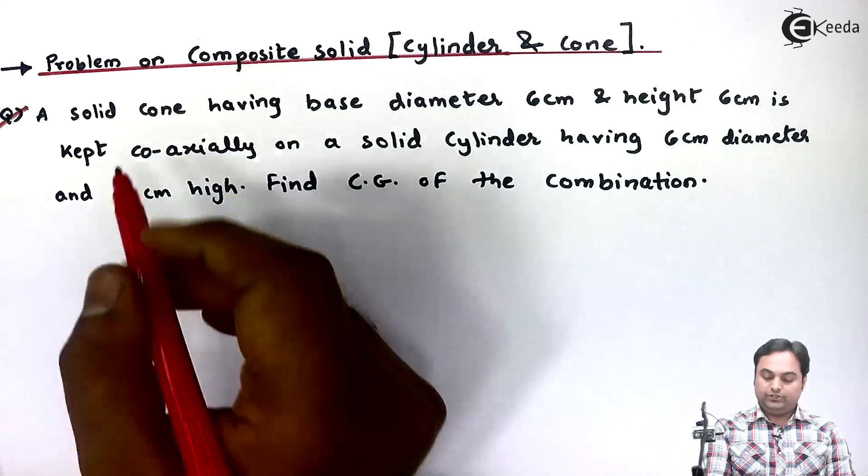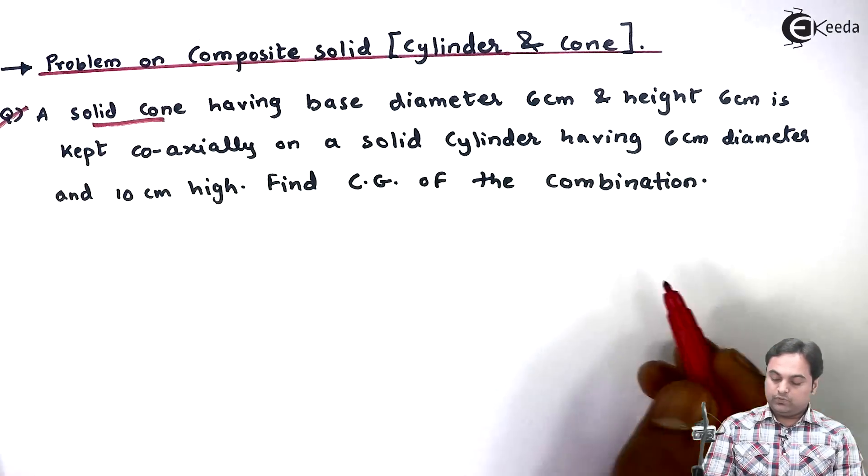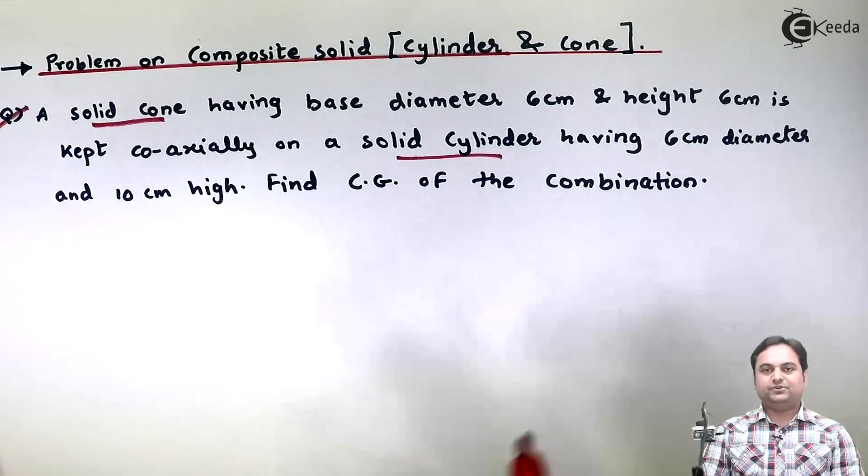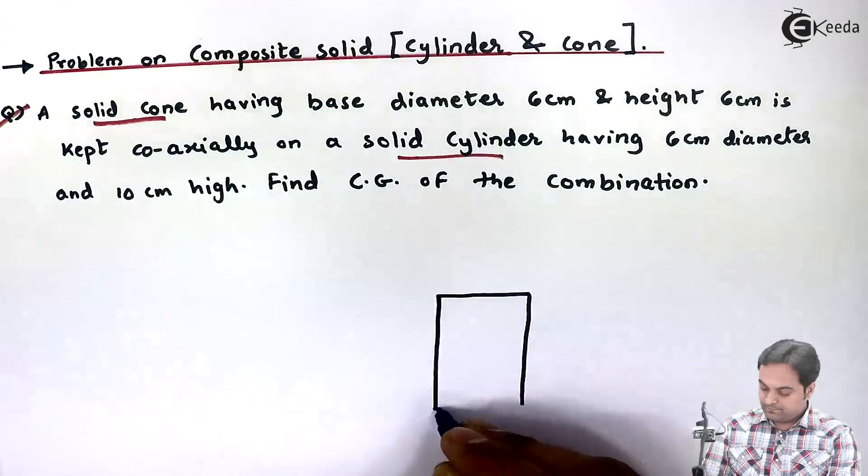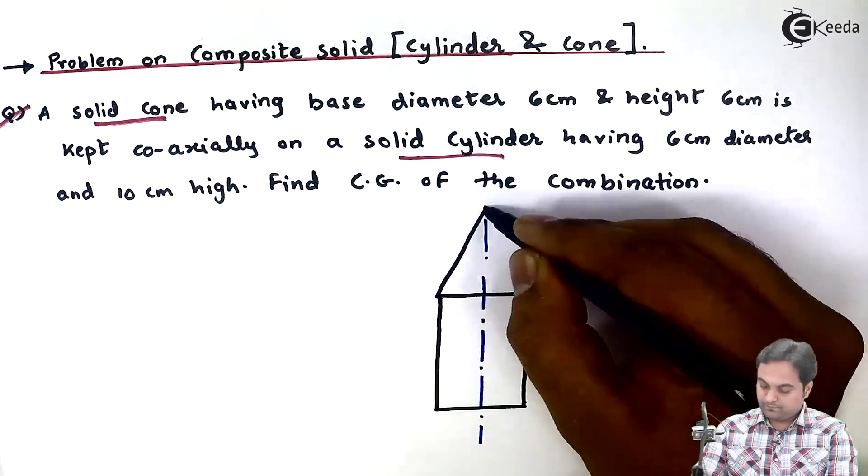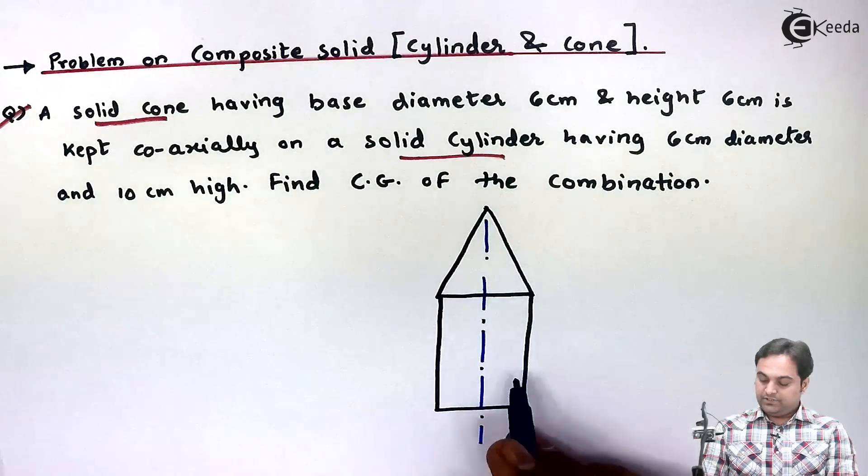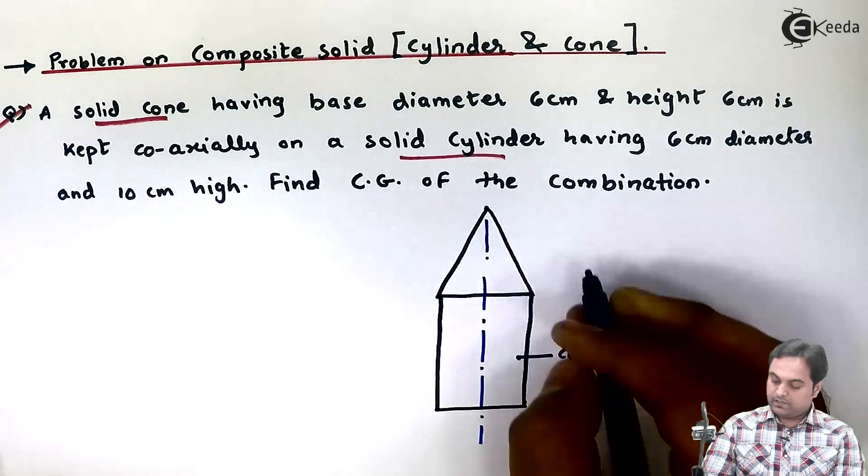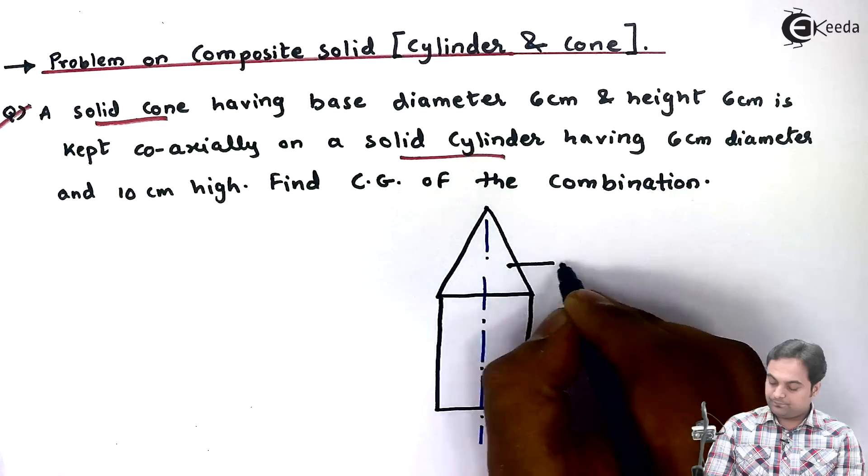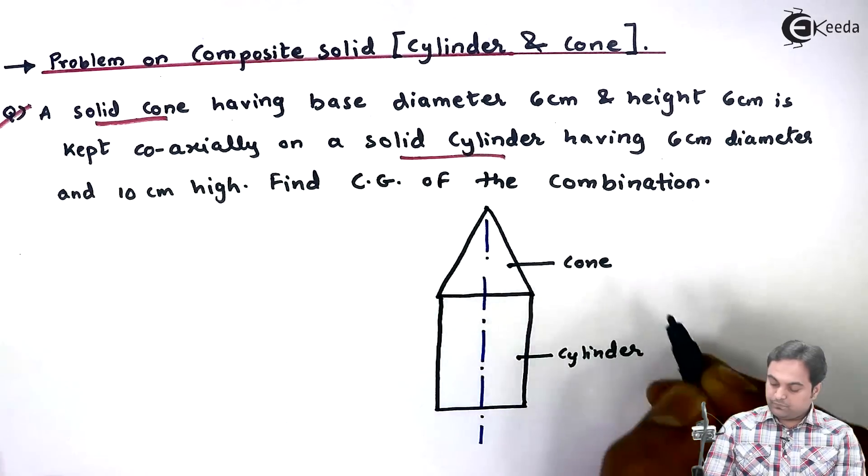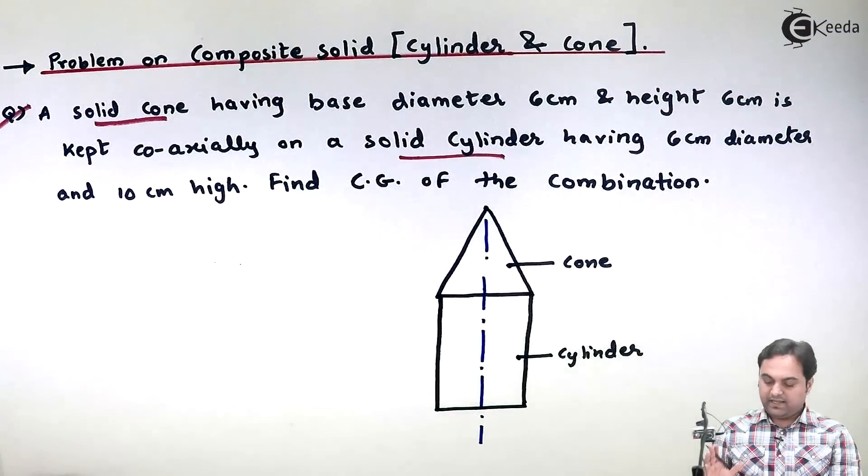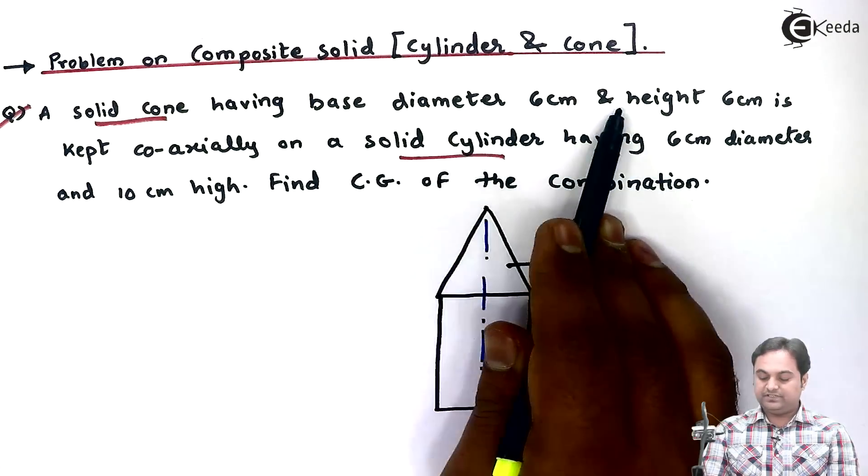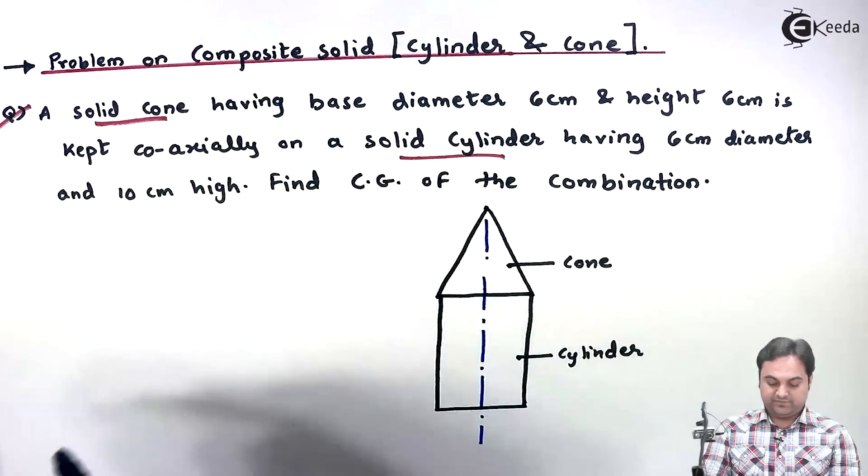So in this question we have a solid cone which is placed over a solid cylinder. Let us draw the diagram for this. So here is the arrangement: cylinder and cone, the cone is placed over the cylinder. I'll mark the dimensions. Solid cone having base diameter 6 centimeter and its height is also 6 centimeter.